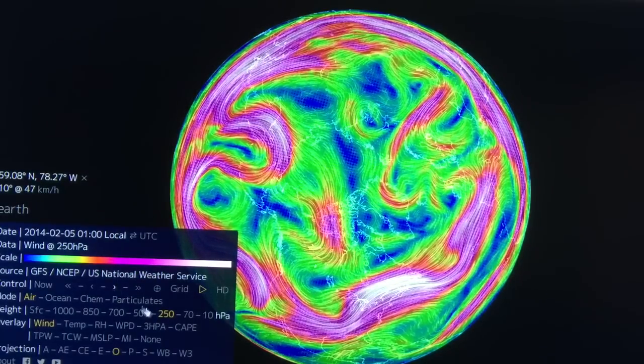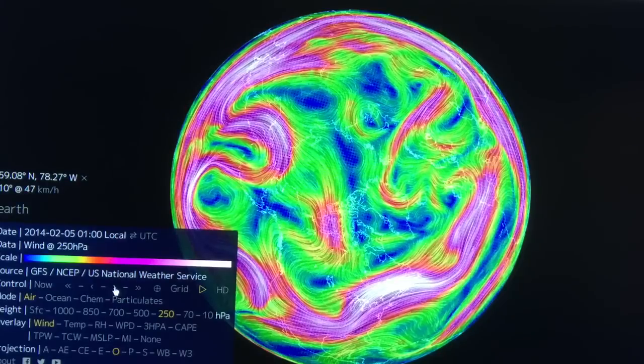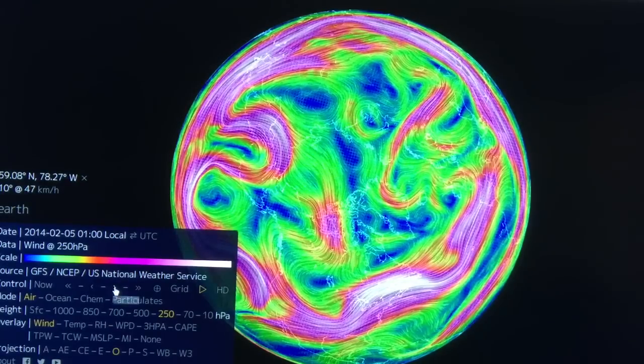I'm looking at the 250 millibar pressure level, which is the jet streams. Okay, so you can see this loop here.